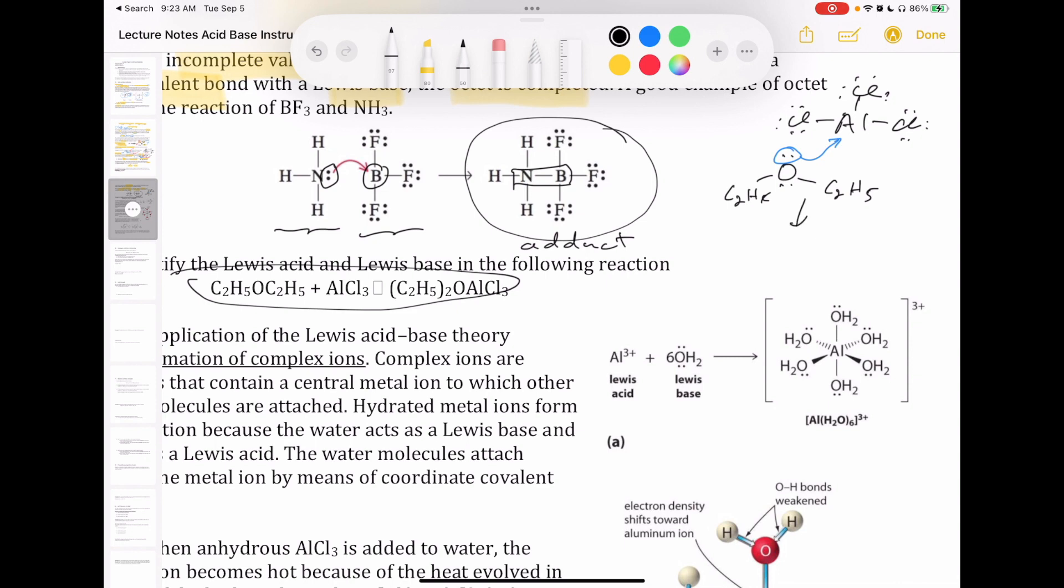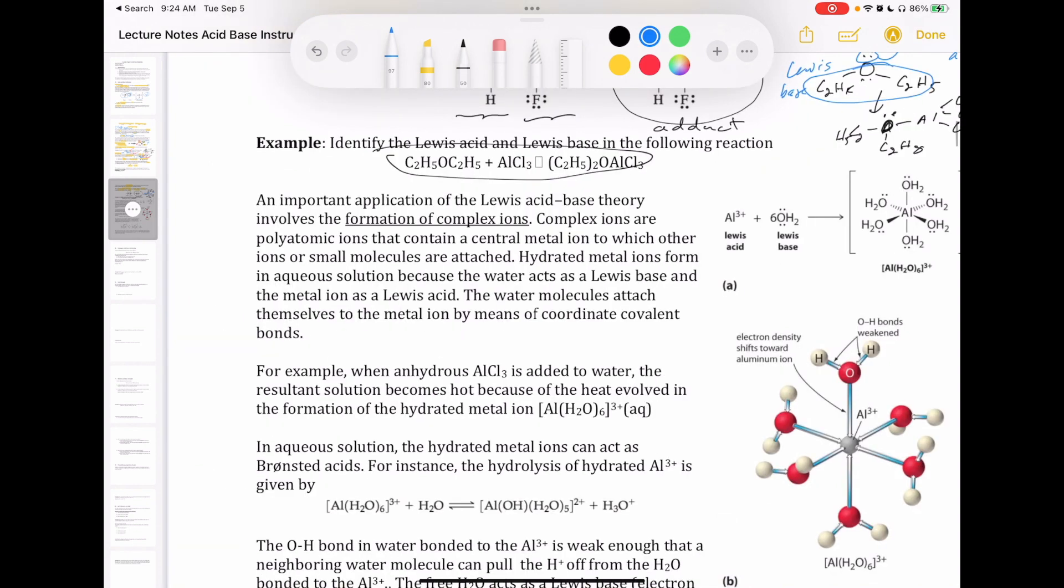So if you get the product here, it will look something like this. Okay, so if you write it that way, then it's pretty clear that the aluminum is the Lewis acid because it's accepting electron. And then the ether compound, which is this guy right here, that's your Lewis base because it's giving away or donating electron to make that bond.